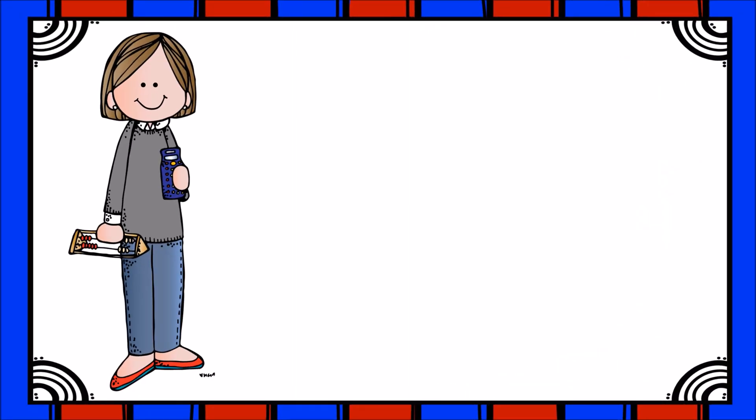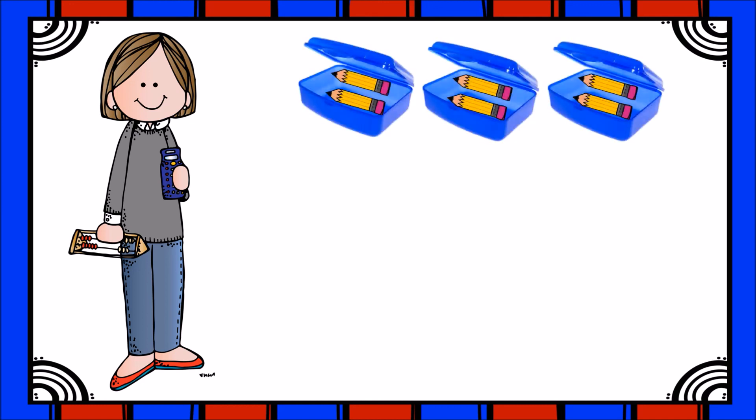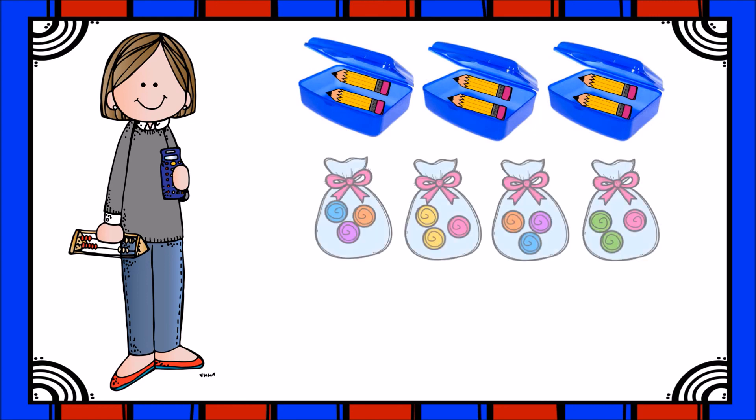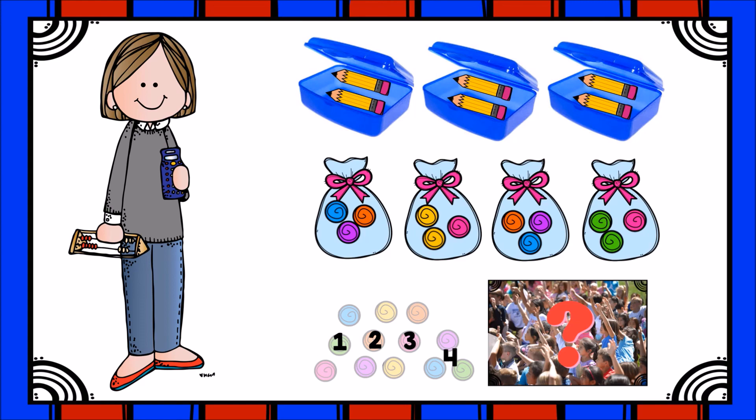Boys and girls, we just looked at three types of problems that involve equal groups. Today and every day, when solving problems involving equal groups, start by identifying what you know and what you are trying to find. Depending on what you are trying to find, you could use repeated addition or multiplication, fair shares, or repeated subtraction.